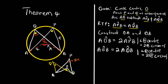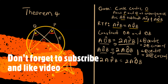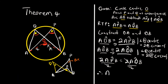This central angle is twice angle APB, and the very same central angle is twice angle AQB. This means that twice angle APB equals twice angle AQB. Dividing both sides by two, we get angle APB equals angle AQB. Proven.